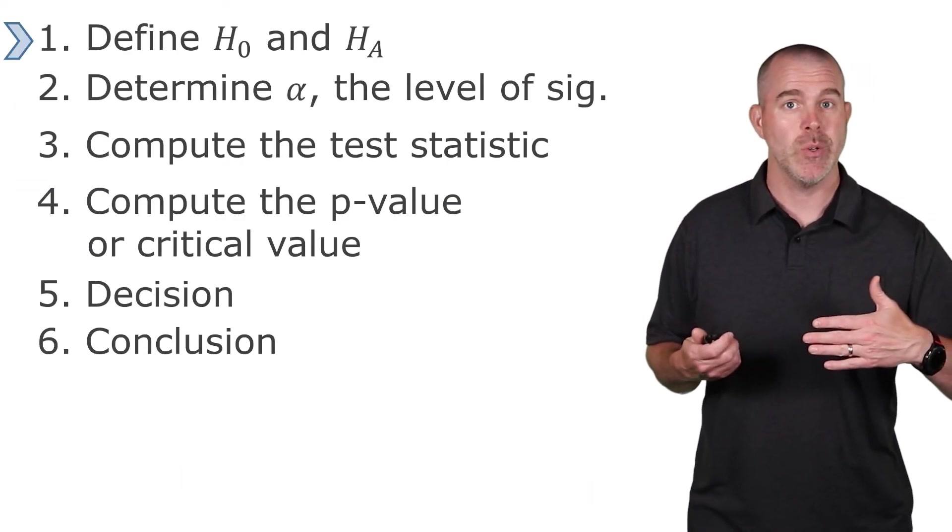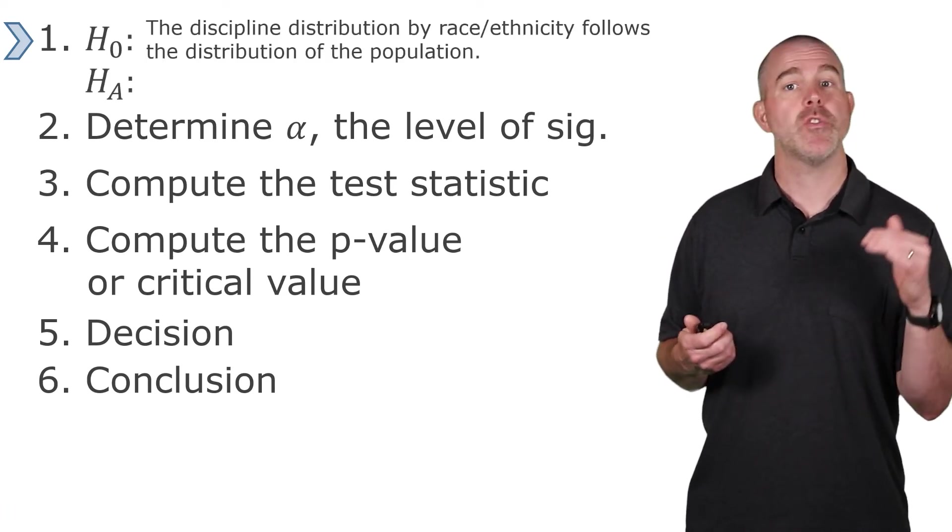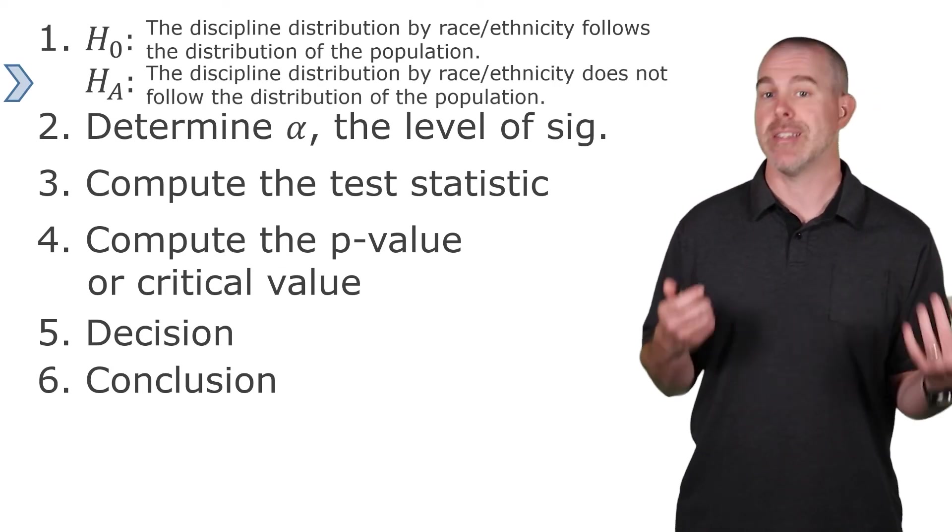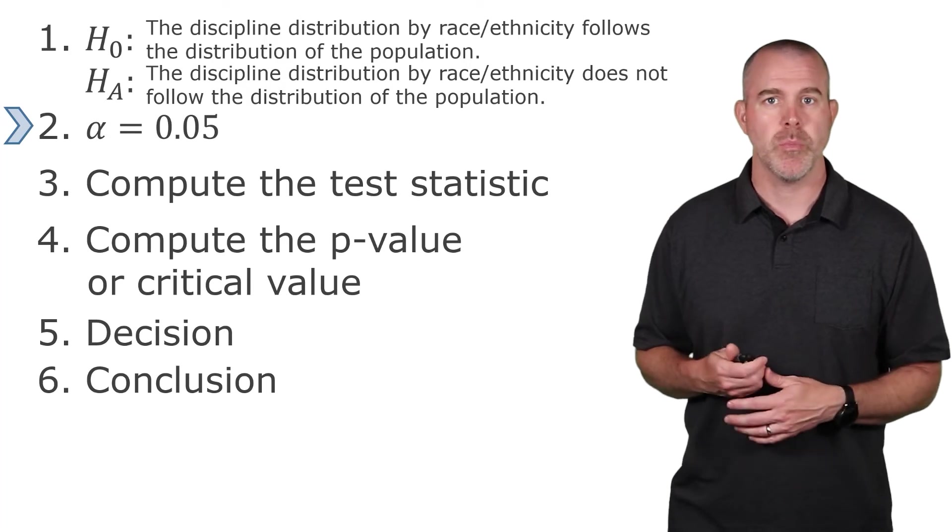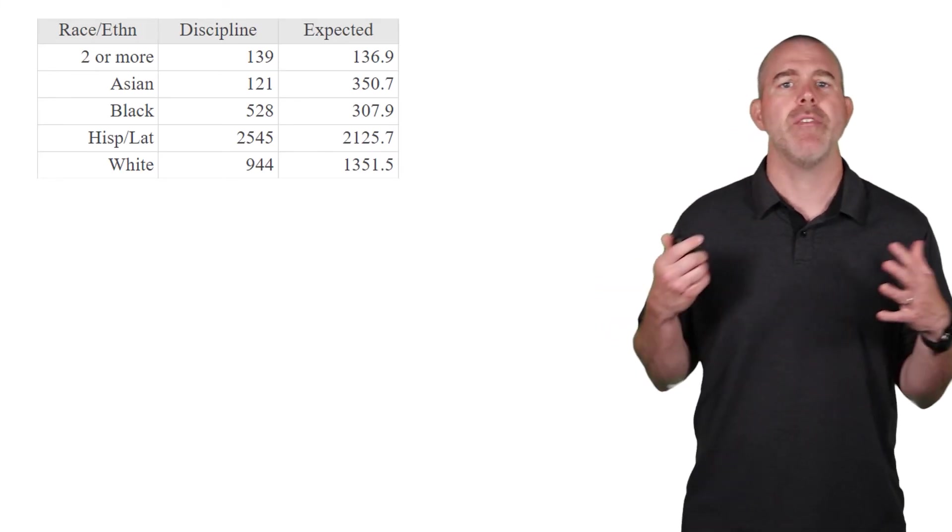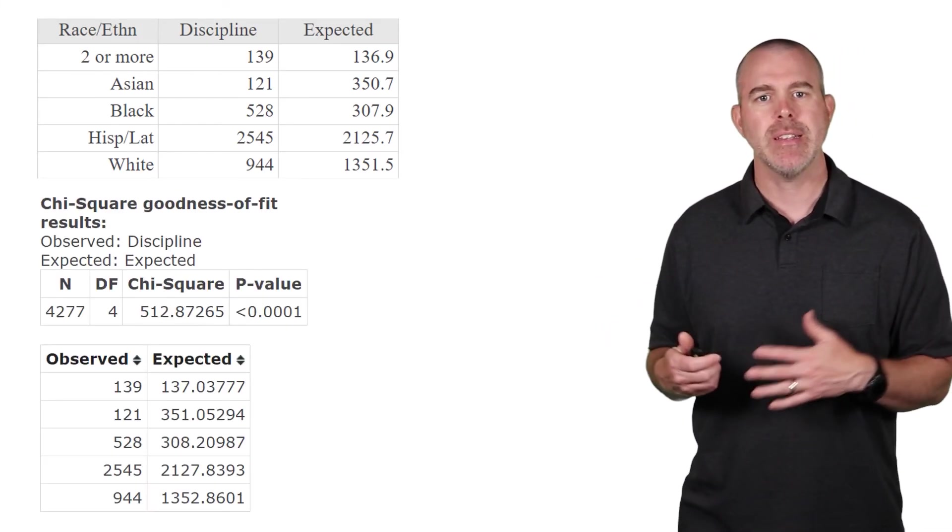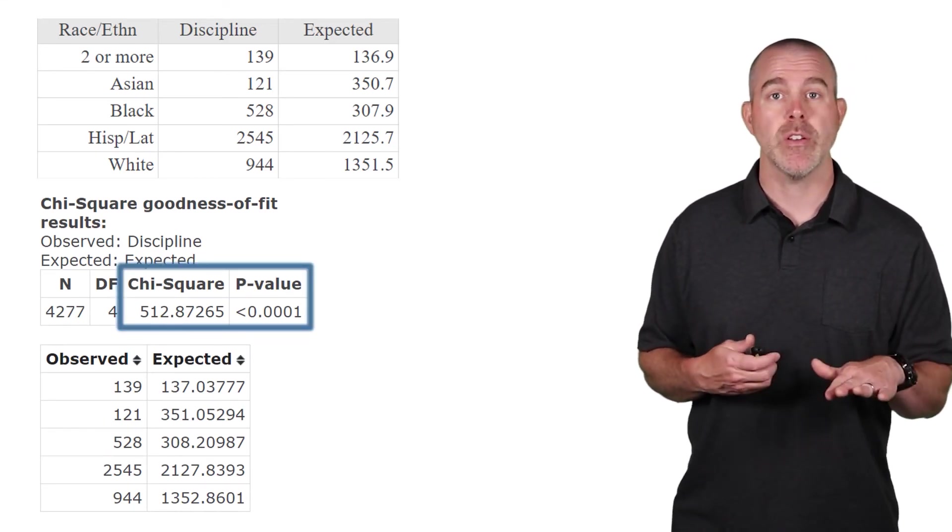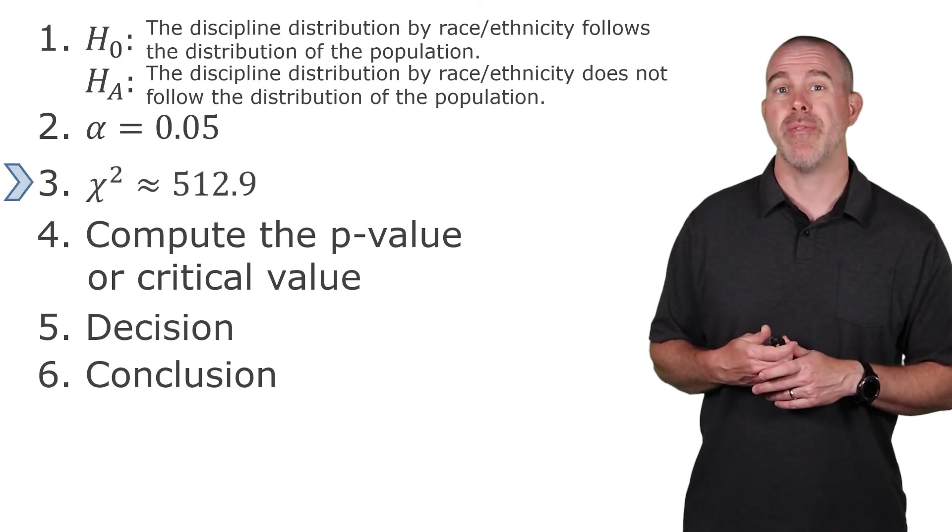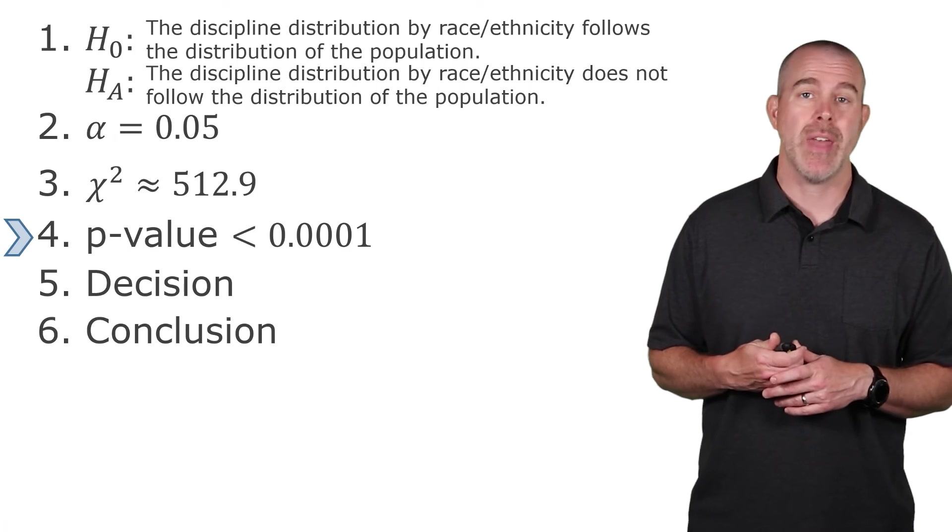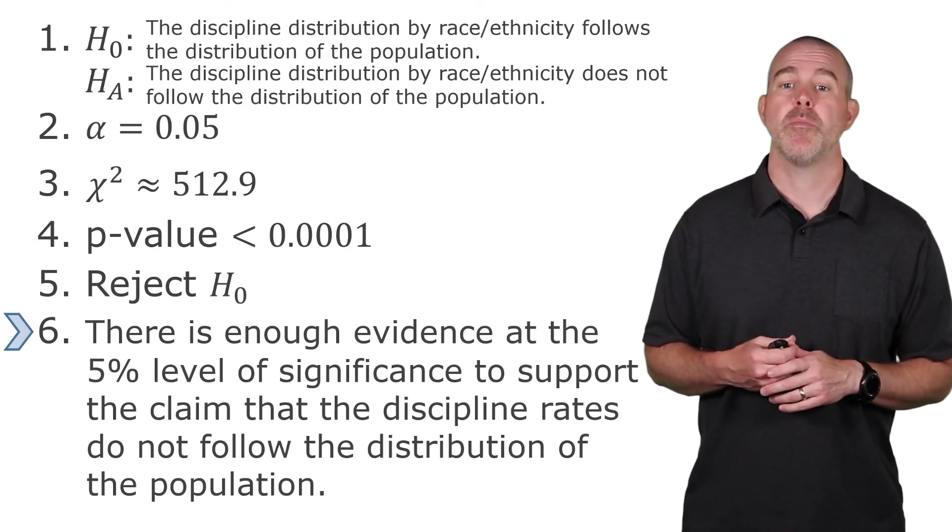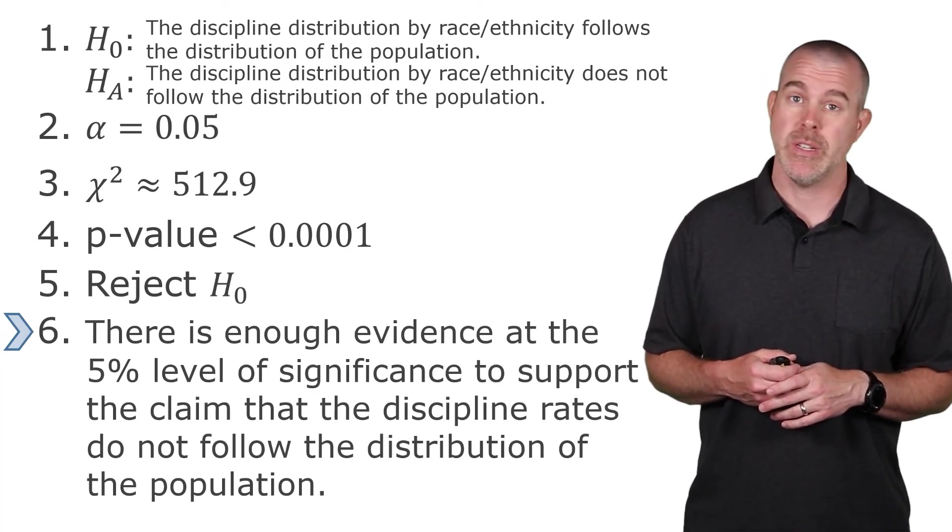The null hypothesis here is the distribution for discipline follows the distribution of the population. And the alternative would be that it does not. Alpha, the level of significance, we'll use 0.05, test statistic, that's our chi-squared. I actually have that output here for you from StatCrunch. We have the actual counts, and then I typed in the expected counts. Here we get our chi-squared goodness of fit test. And you can see very big chi-squared, very small p-value. So our chi-squared is 512.9. Our p-value, less than 1 ten-thousandth. That means we would reject the null hypothesis. And there is enough evidence to support our claim that the discipline rates don't follow the distribution of the population.